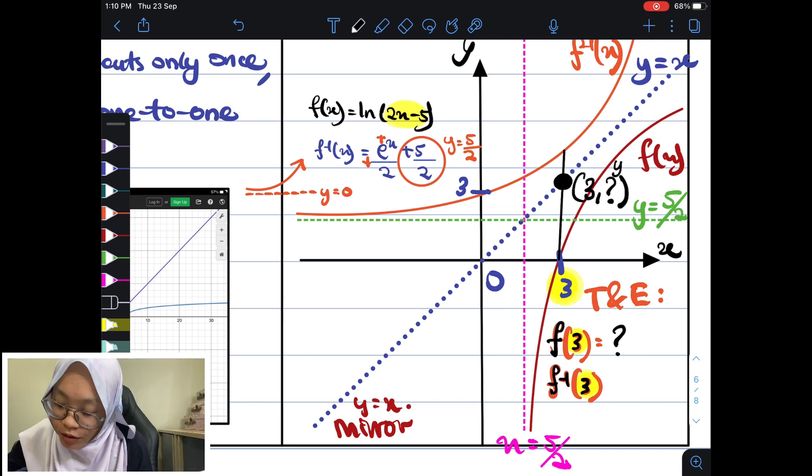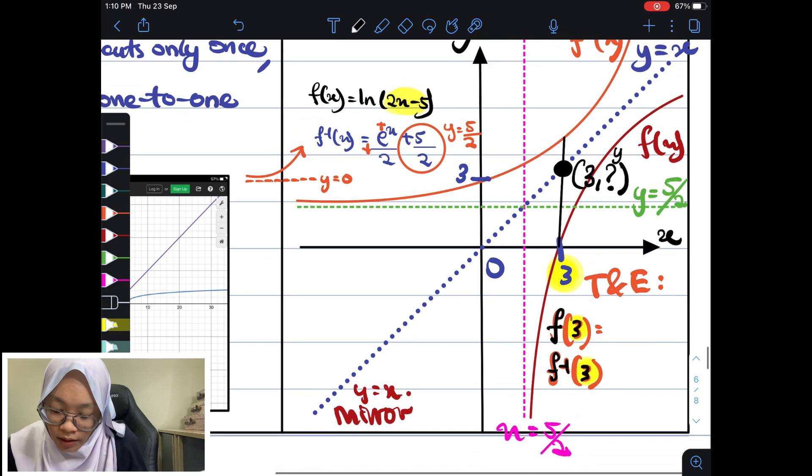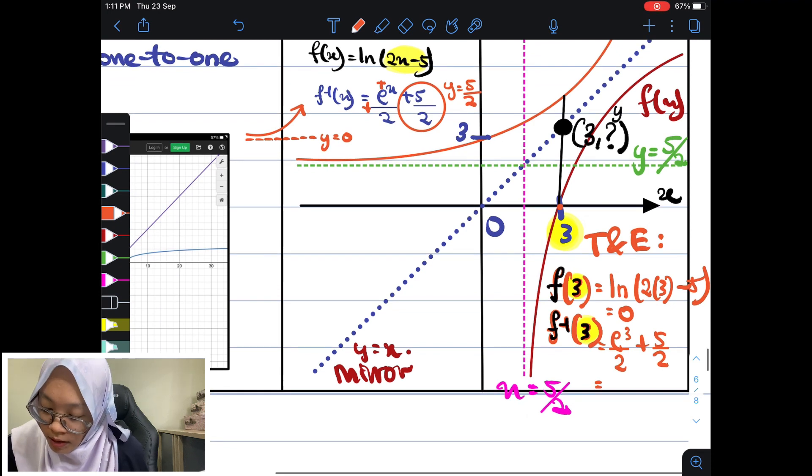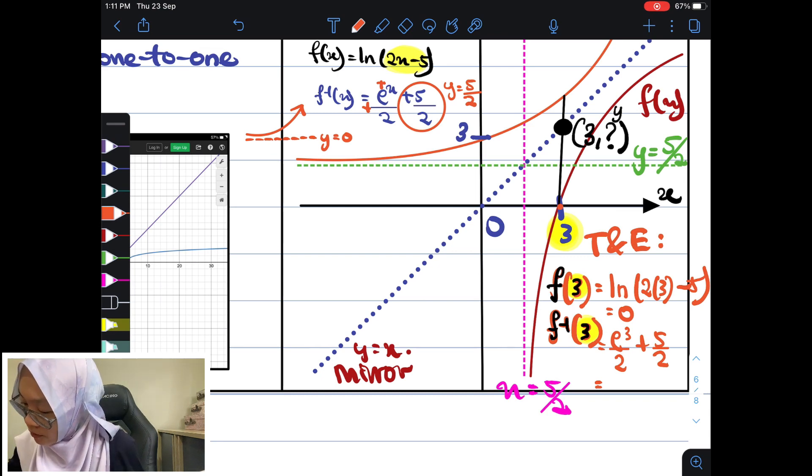So, now, our job is to find whether dia cross ataupun dia tidak. So, kalau nilai ln(2 times 3 minus 5), you will get ln(1). This is 0. Kalau yang ni, e^(3/2) plus 5 over 2. You will get 12.54. 12.54 betul lah dia dekat area ni. Dia dekat bahagian atas. Ha, so, 1 dekat bawah, 1 dekat atas. Betul lah yang kita lukis ni. Maksudnya, dia split out.